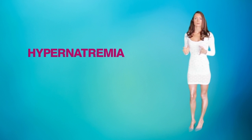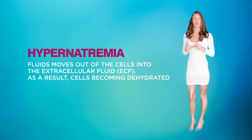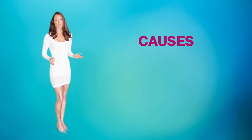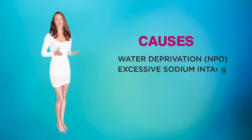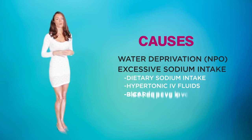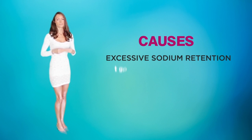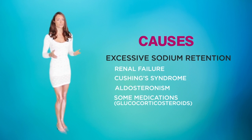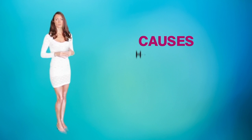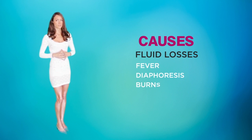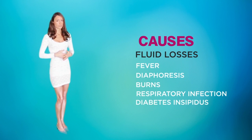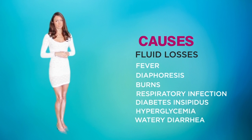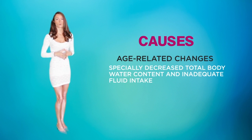With hypernatremia, fluid moves out of the cells into the extracellular fluid, and as a result cells can become dehydrated. Causes include water deprivation, excessive sodium intake (dietary or IV), excessive sodium retention such as in renal failure, Cushing's syndrome, aldosteroneism, and medications such as glucocorticoid steroids. Other causes include fluid losses, fever, diaphoresis, burns, respiratory infection, diabetes insipidus, hyperglycemia, watery diarrhea, and age-related changes such as decreased total body water content and inadequate fluid intake.